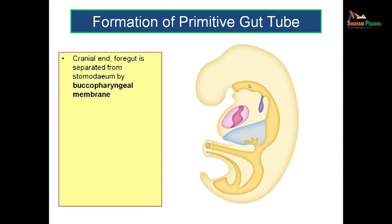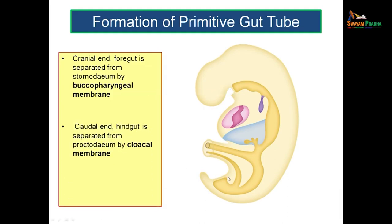At the cranial end, the foregut is separated from the stomodeum by a membrane known as the buccopharyngeal membrane. This buccopharyngeal membrane initially closes the communication between the stomodeum and the primitive gut, but later it gets perforated and communication begins from the exterior into the primitive gut. Similarly, caudally, the hindgut ends as a blind loop, and the separating membrane between the proctodeum and the hindgut is known as the cloacal membrane. Cranially you have the buccopharyngeal membrane, and caudally you have the cloacal membrane; both will be perforated so that communication is maintained between the primitive gut and the exterior.